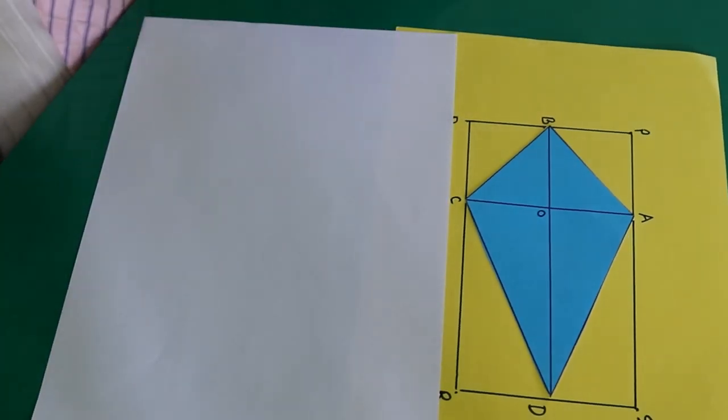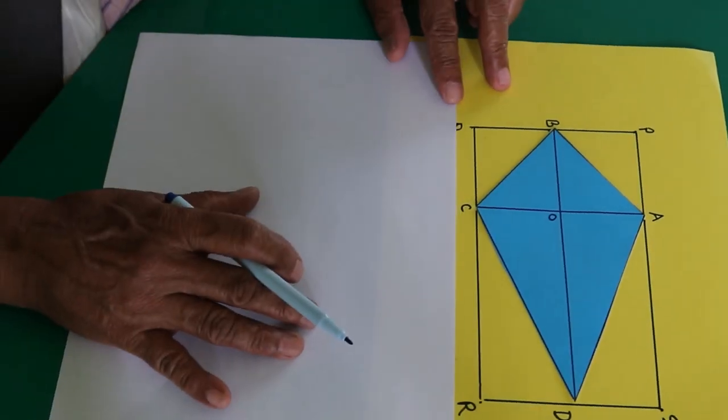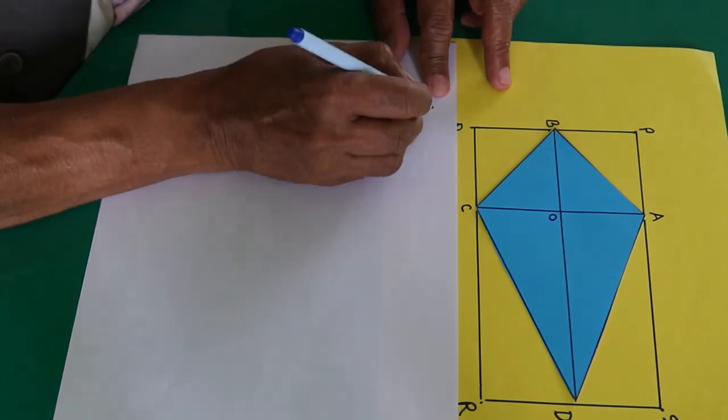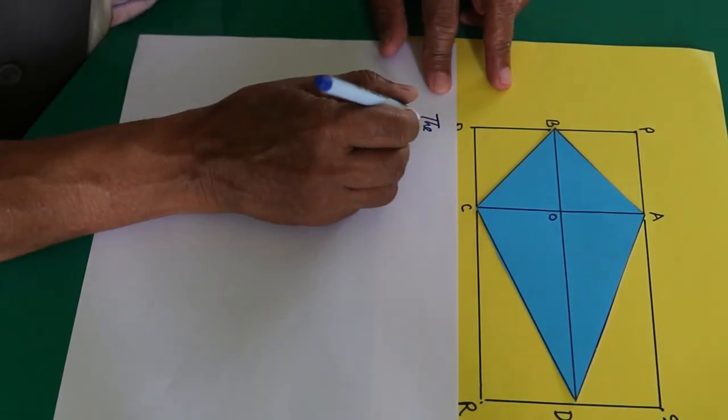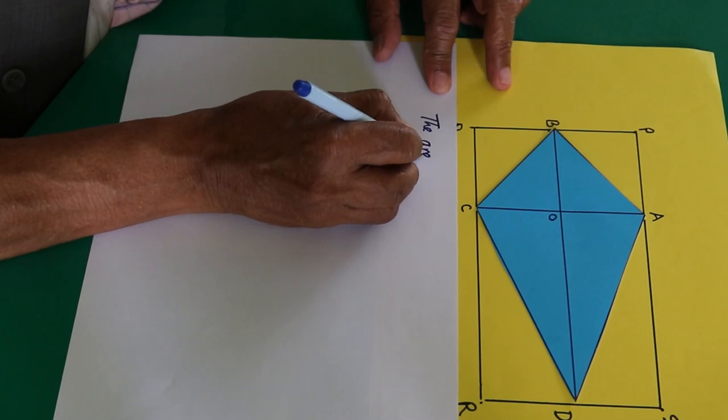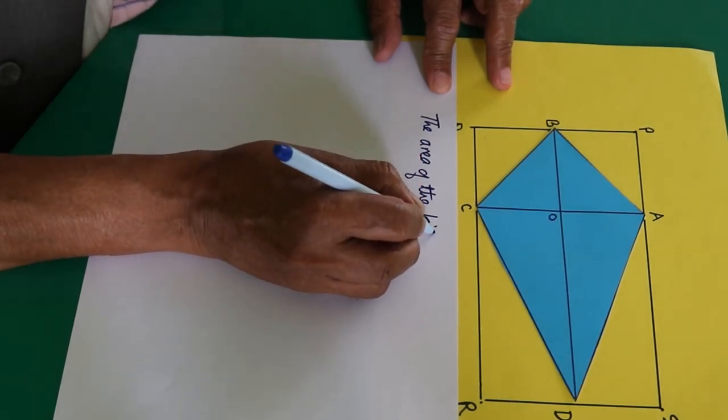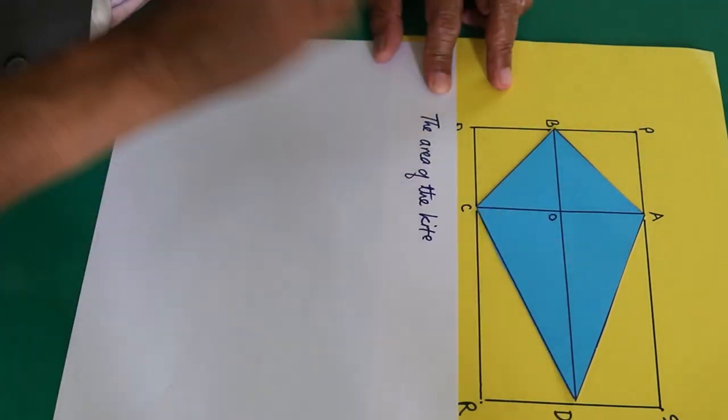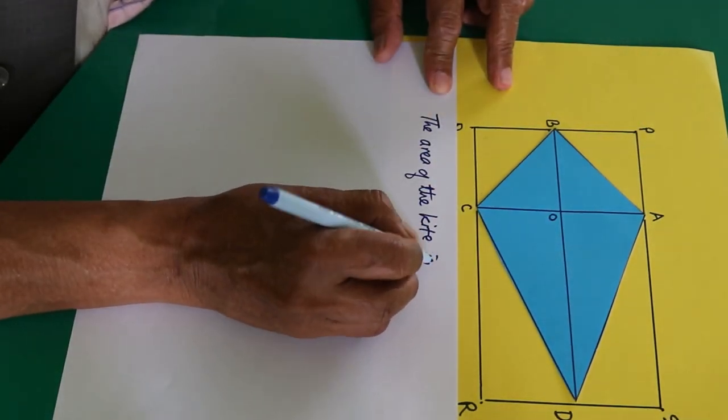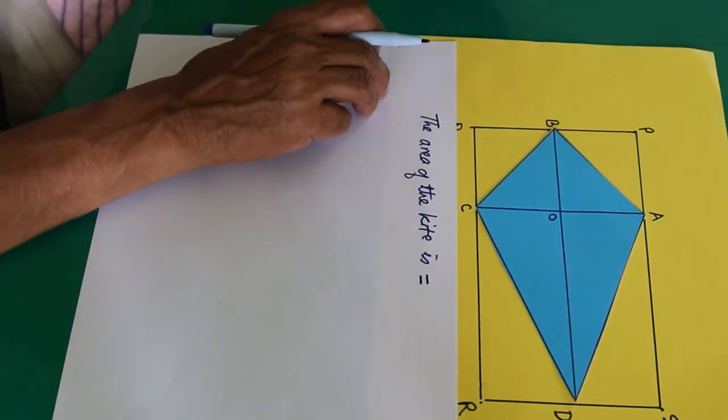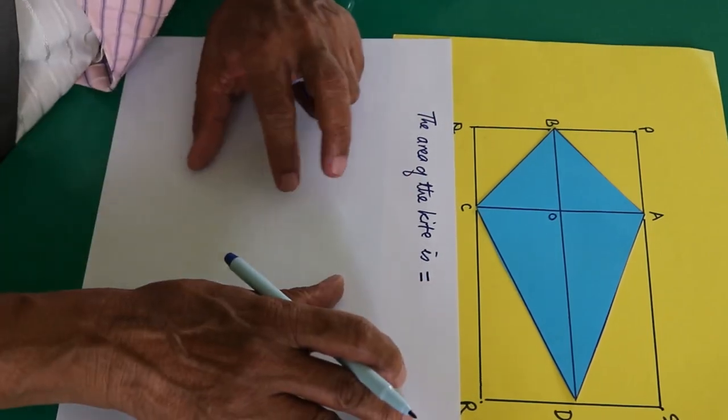In a sheet of paper we may write it as the area of the kite ABCD is... Tell me what it is? You may have guessed it, you know.